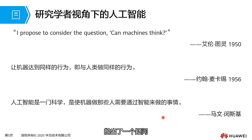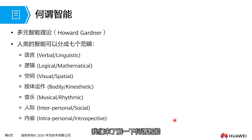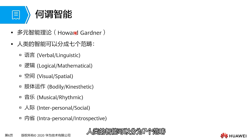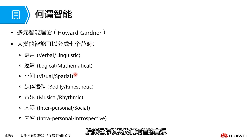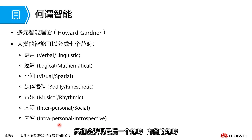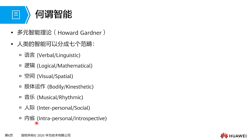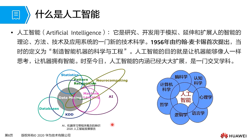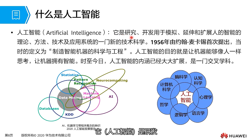Marvin Minsky raises a question: what does intelligence mean? Through this slide, we can see that human intelligence can be divided into seven categories: language, logic, space, physical operation, music, interpersonal relationships, and introspection. The last category — introspection — is a bottleneck that current machines have not yet reached. The general definition of artificial intelligence refers to the research and development of theoretical approaches for simulating, extending, and expanding human intelligence.